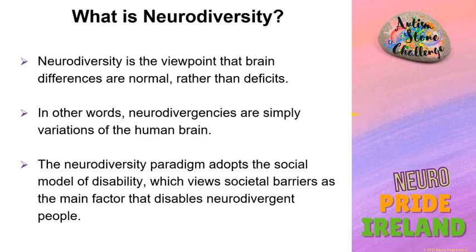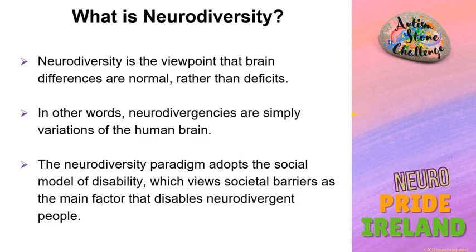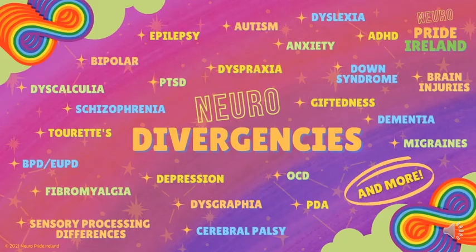The neurodiversity paradigm adopts the social model of disability, which views societal barriers as the main factor that disables neurodivergent people. The neurodiversity movement rejects the framing of neurodivergent people as requiring treatment to force them to adapt to societal ideas of normality. Instead, it advocates for support systems that honour neurodivergent people's neurology, self-expression and being.